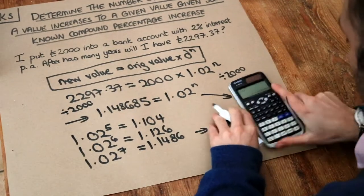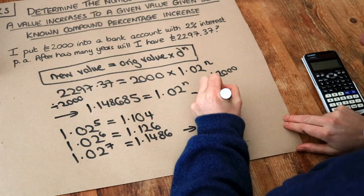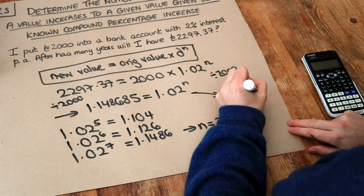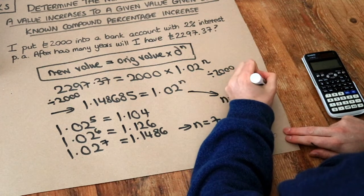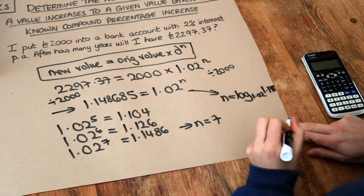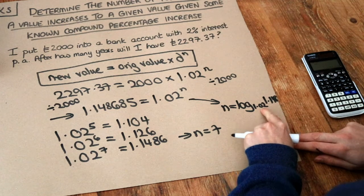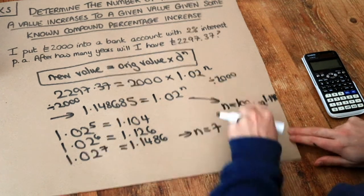We can basically use something called the log function, logarithms. And what we do is n is going to be log base 1.02, and I'll explain what base means, of the 1.148, etc. And basically, this little number here is known as the base of the logarithm, and it's got to match the base of this exponential, so the number, the bigger number in this power here.